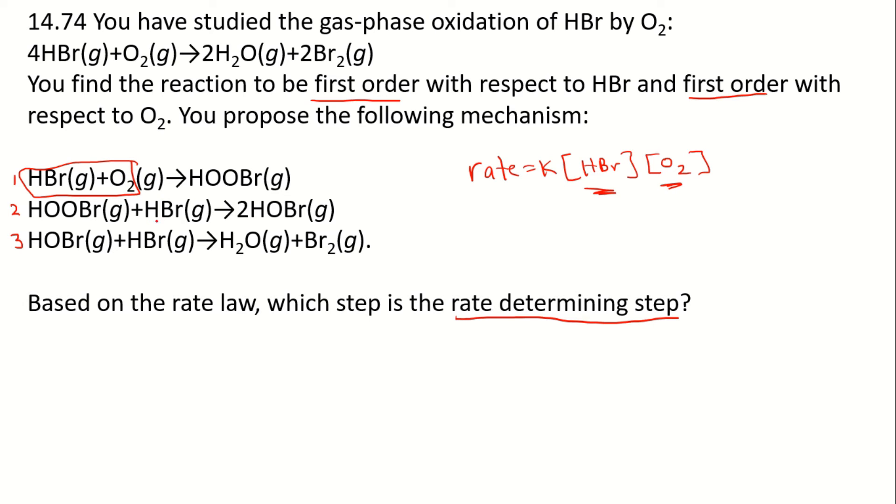That means the second and third steps are much faster than the first step. As a result, the second or third step do not influence the rate of the reaction. Because in our rate law only HBr and oxygen show up, the rate must depend on the step where those chemicals are present, and that's the first step.